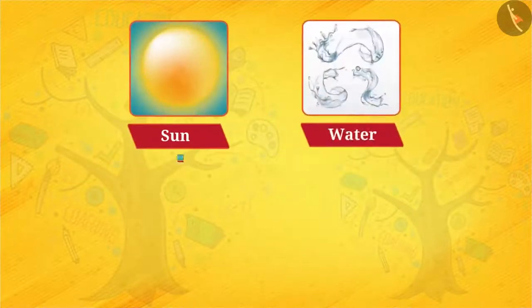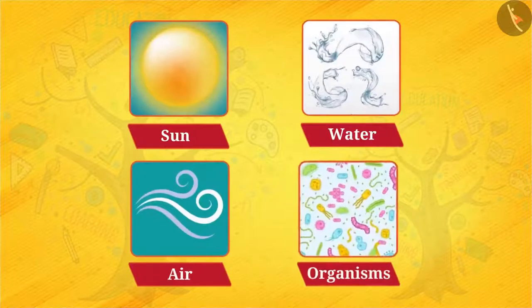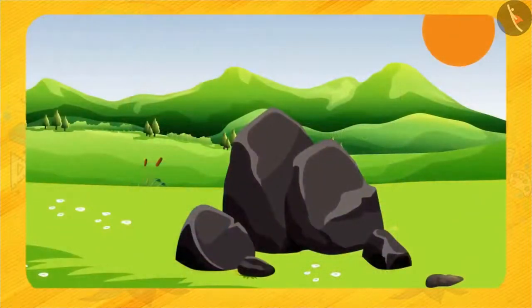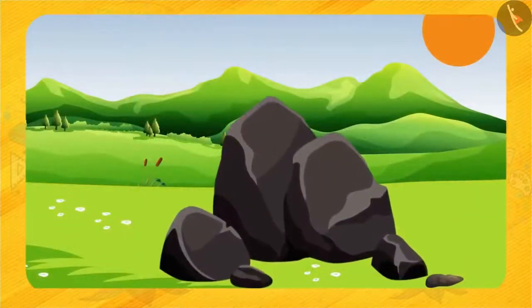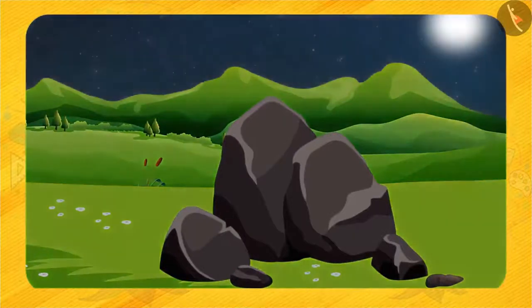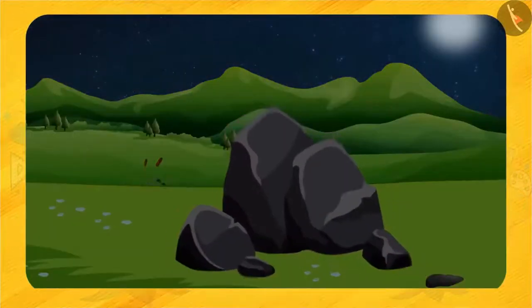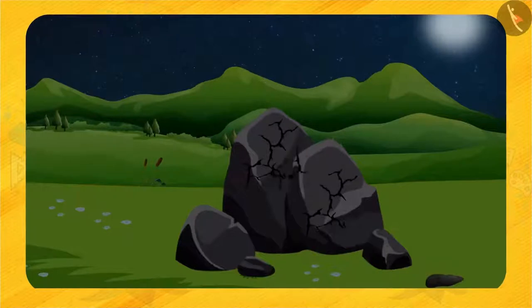Let us see how. During daytime, the sun heats up the big stones and this makes the stones expand, and during night these stones cool down and contract. Since all parts of rock do not expand and contract at the same rate, this results in the formation of cracks and ultimately the huge rocks break up into smaller pieces.